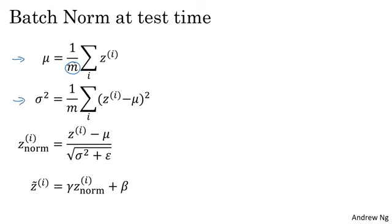Then you compute the variance and then you compute z_norm by scaling by the mean and standard deviation with epsilon added for numerical stability. And then z tilde is taking z_norm and rescaling by gamma and beta.